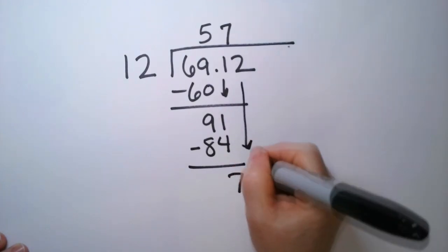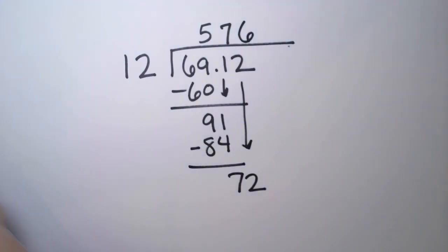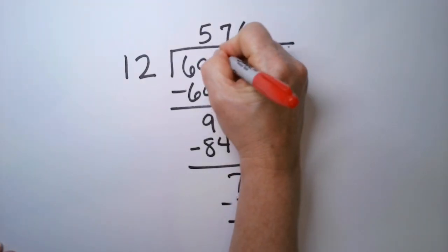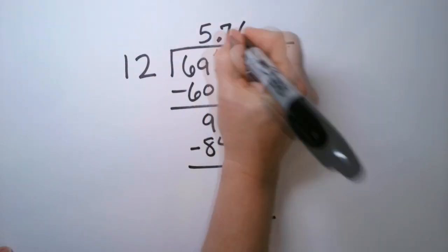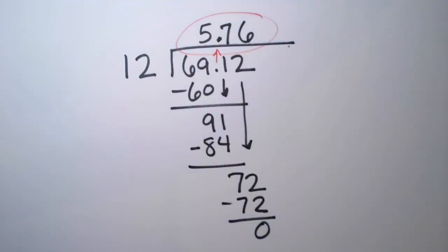I'm going to drop that 2 and it goes in perfectly, doesn't it? As a 6 we have a 72 and we have 0 remainder. The last step is to push up that decimal point. And my answer is 5.76.